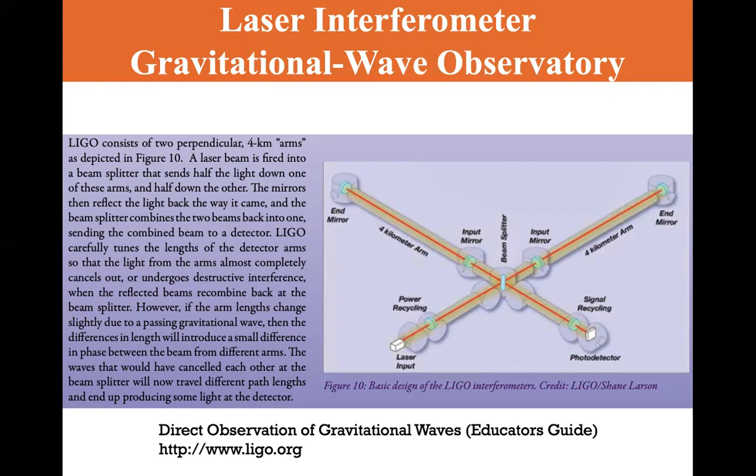However, if the arm lengths change slightly due to a passing gravitational wave, then the differences in length will introduce a small difference in phase between the beam from different arms. The waves that would have canceled each other at the beam splitter will now travel different path lengths and end up producing some light at the detector. And that's what a LIGO does.